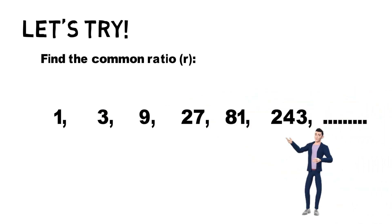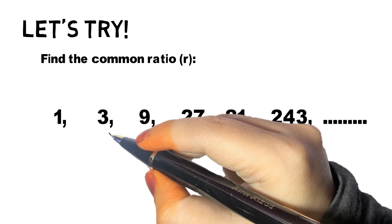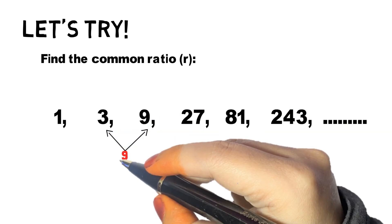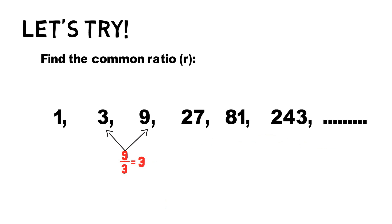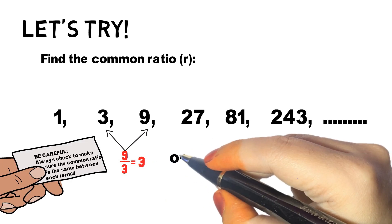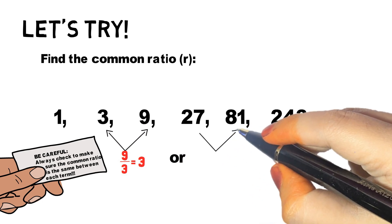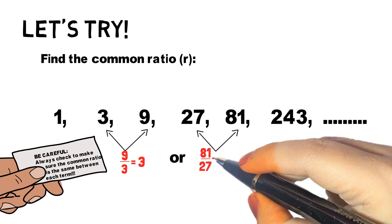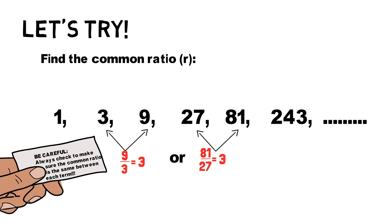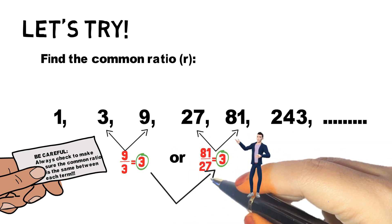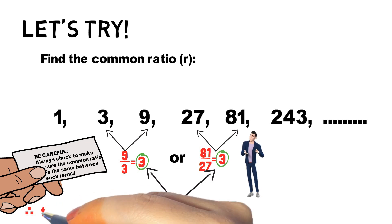We need to find the common ratio, so we divide any term by the previous term. The common ratio is 3.